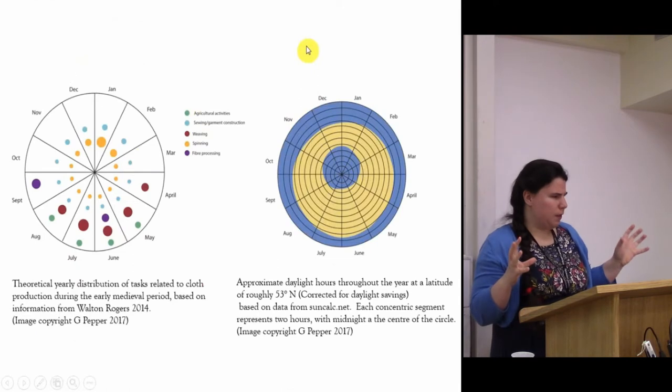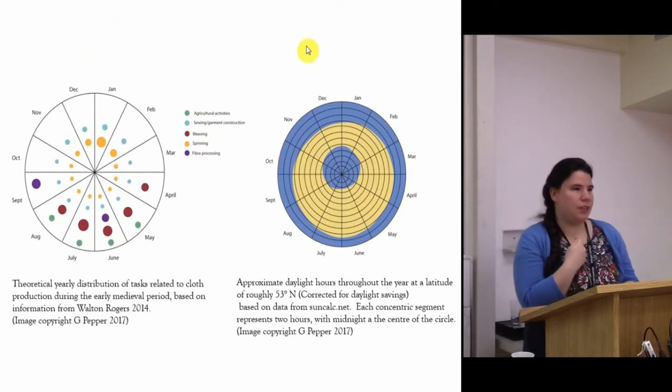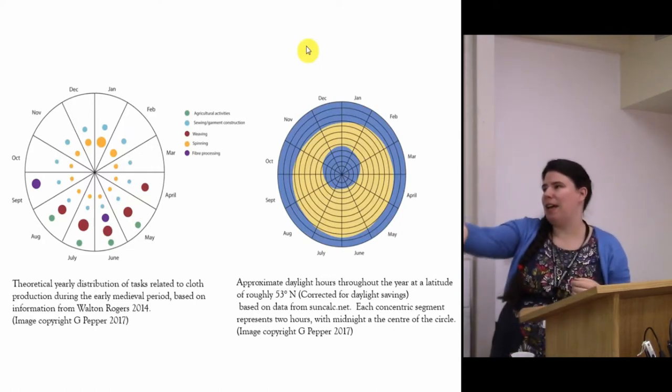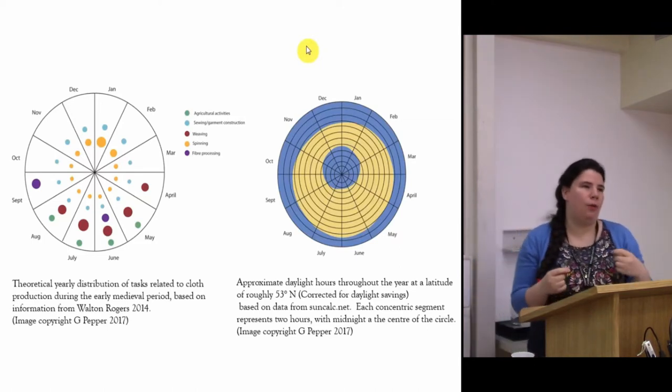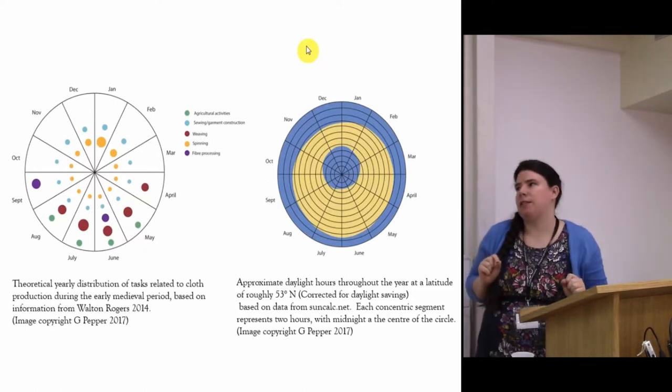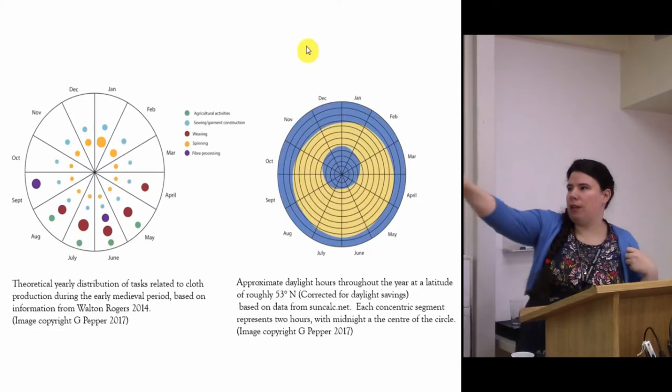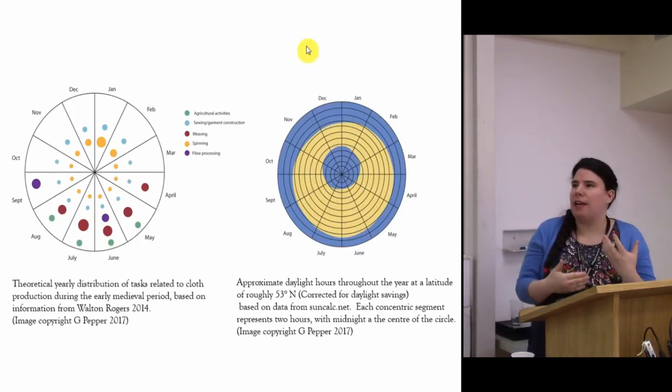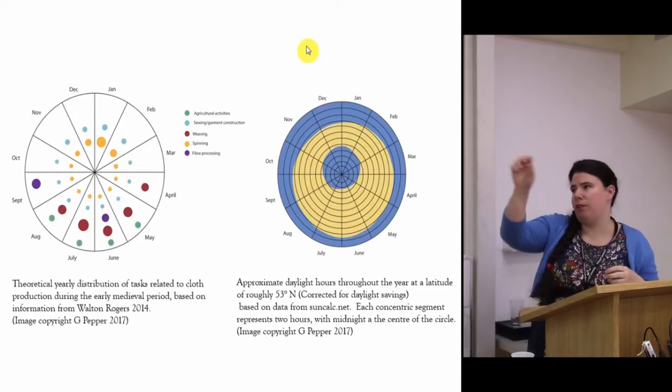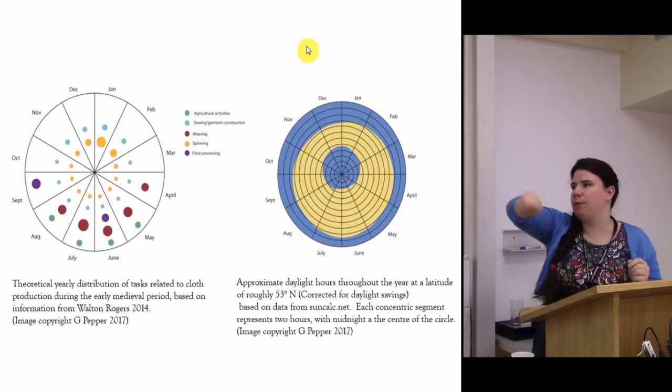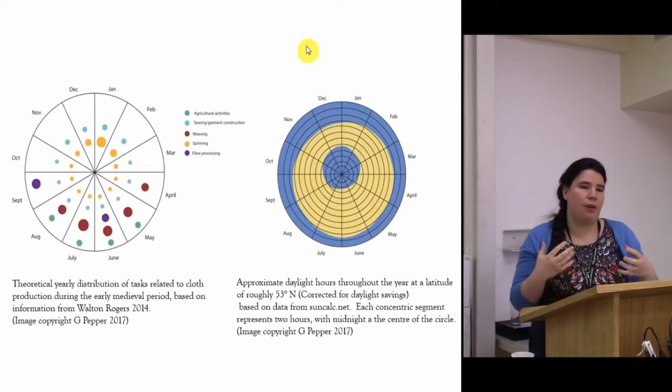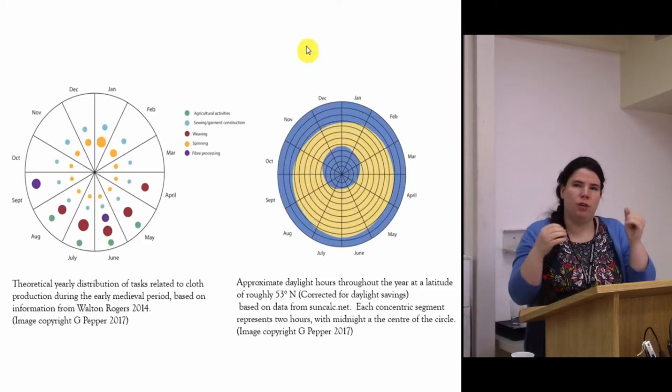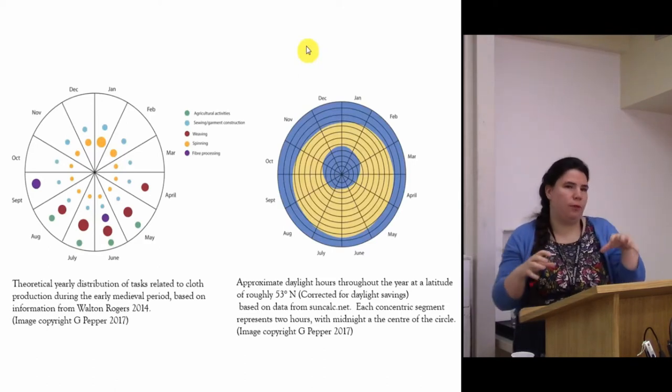Thinking about how the hours that go into producing cloth within the span of a year, these are some recent attempts at visualizing this. The image on the left is based on suggestions by Penelope Walton Rogers on how labor specifically related to textile production might have been distributed throughout the year. She suggests that weaving indicated by the dark red spots was happening mostly in the summer months beginning in spring because you're going to have more daylight at that time. You've also got agricultural activities relating to shearing sheep, harvesting flax, which are going to be relevant at that time of year. Activities like spinning yarn can take place throughout the entire year and you would probably have some catch-up time in the winter months. What's suggested by this is that you have this concentration of long weaving days at optimal time for long hours of daylight.